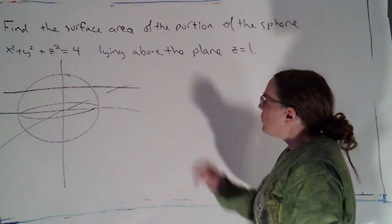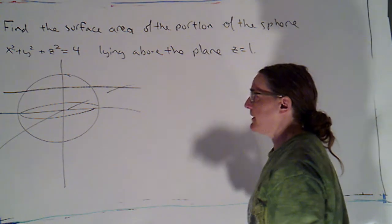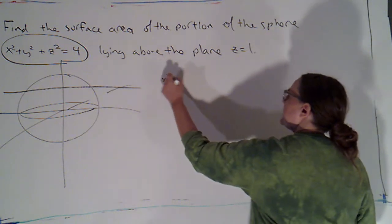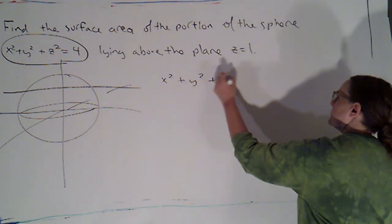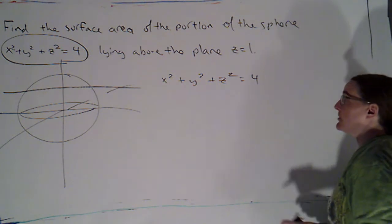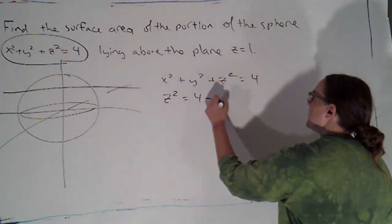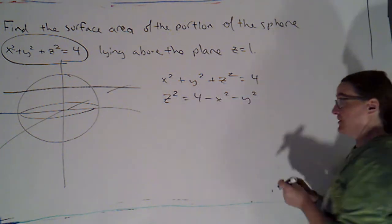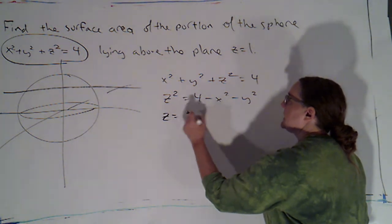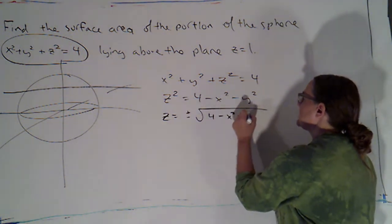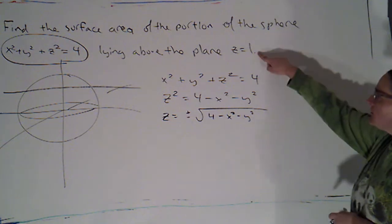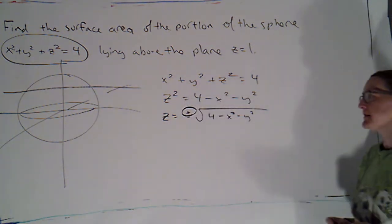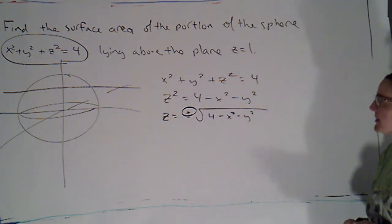In order to do that, I need to do a couple of things. First, the sphere equation doesn't give me z as a function of x and y, so I need to solve for it. z squared is 4 minus x squared minus y squared, which gives z as plus or minus the square root of 4 minus x squared minus y squared. But since I'm looking for the part above the plane z equals 1, z is going to be positive.